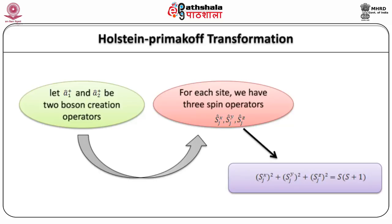Adopting the Schrödinger representation, let a1† and a2† be two boson creation operators. For each site, we have three spin operators: Sjx, Sjy, and Sjz, where Sj represents the spin at the j-th site. They are coupled to the identity. The identity Sjx² + Sjy² + Sjz² = S(S+1), where S is the total spin, is very important and will be used throughout this module.